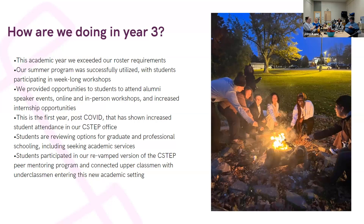This is year three of the grant, ending in June; year four starts in July. This academic year we exceeded our roster requirements — the program is funded for 100 students and we were at about 125 on our roster. I always over-enroll because first-year students change their major, people don't return, we have graduates, et cetera. In terms of actual participation and involvement, it's around 85, which is perfectly normal. We offer a summer jumpstart program every summer — a week-long online workshop. We take many EOP students since they meet the same demographic requirements.